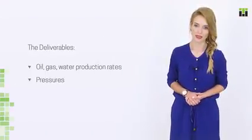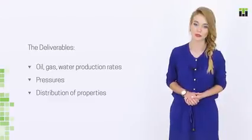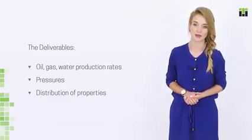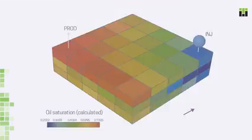The second type of deliverables is spatial distribution of properties such as saturation and pressure at each time step of the simulation run. This information is usually coded as binary files that can be opened using spatial software.